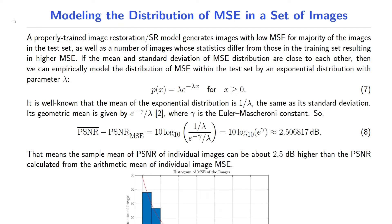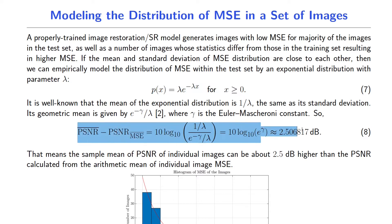To relate those two different definitions, consider a properly trained image restoration or super-resolution model. Such a model generates images with low MSE values for most of the images. However, it is very likely that we have a few images giving higher MSE values. Knowing that MSE is always non-negative, if we look at the mean and the standard deviation of MSE values and see that they are close to each other, then we can empirically model the MSE distribution in the test set by an exponential distribution. In this case, the two estimates can deviate as much as 2.5 dB from each other.